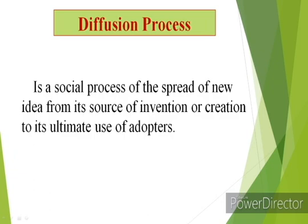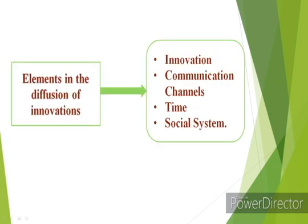The diffusion process is a social process of the spread of a new idea from its source of invention or creation to its ultimate user or adopter. That social process is called the diffusion process. Next, we will discuss the elements in the diffusion of innovation. There are different kinds of elements: first is innovation, second is communication channel, third is time, and fourth is social system.